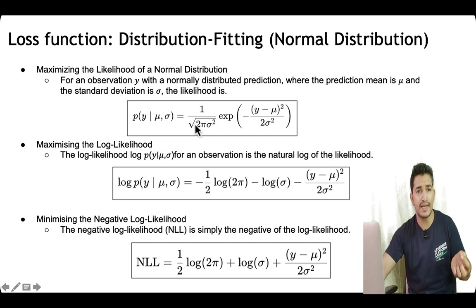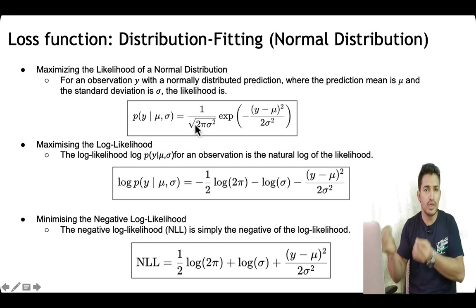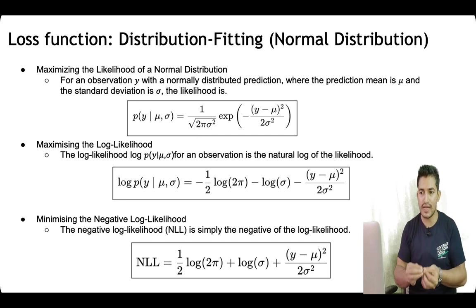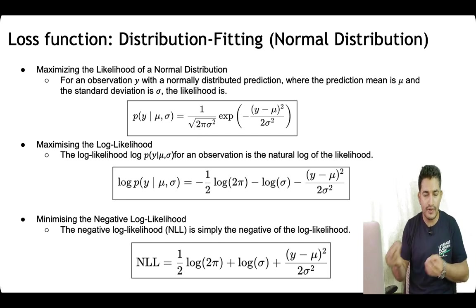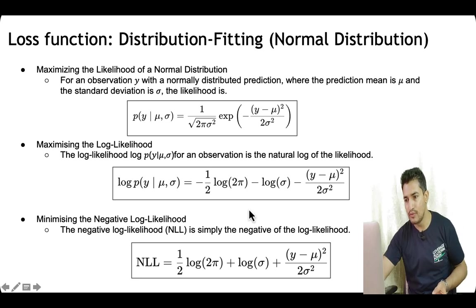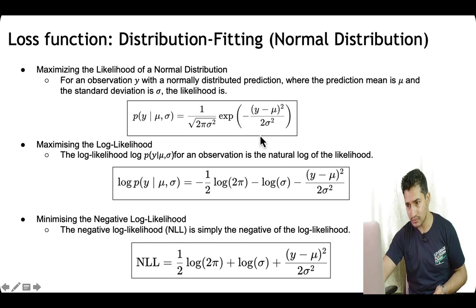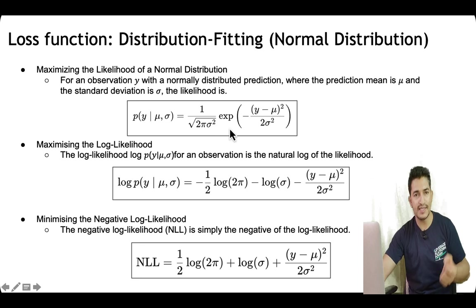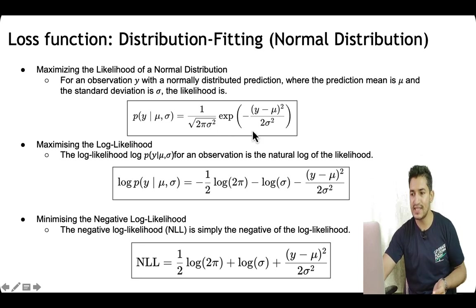This is the PDF — probability density function — of the normal distribution. What we want to do is maximize the likelihood of data belonging to the normal distribution, which means maximizing the PDF to be as high as possible. Maximizing the likelihood is the same as maximizing the log of likelihood, because the log function is monotonically increasing.